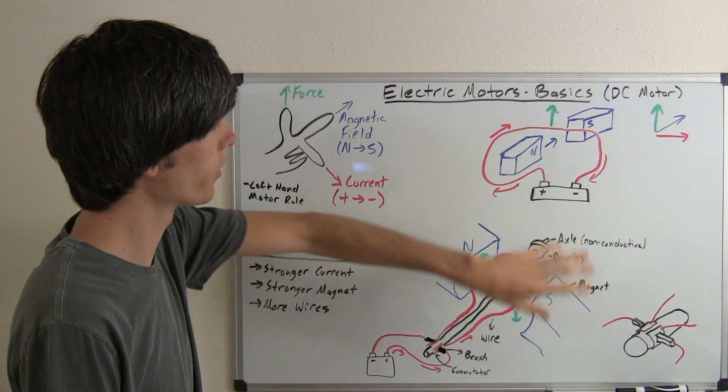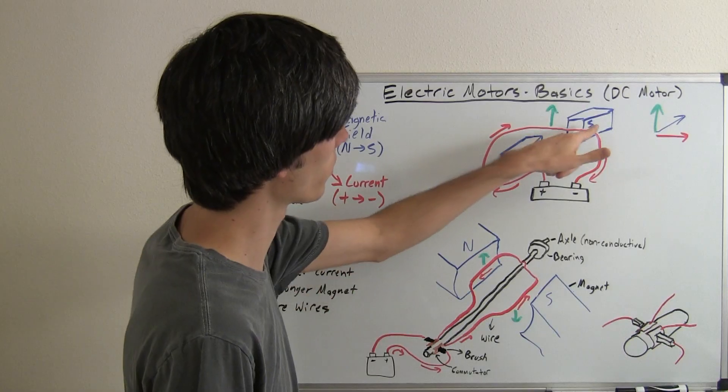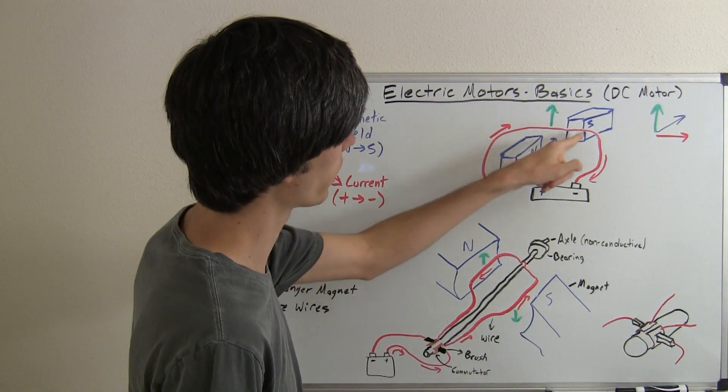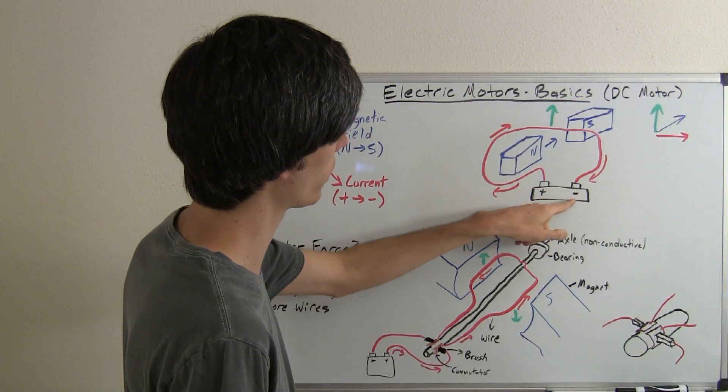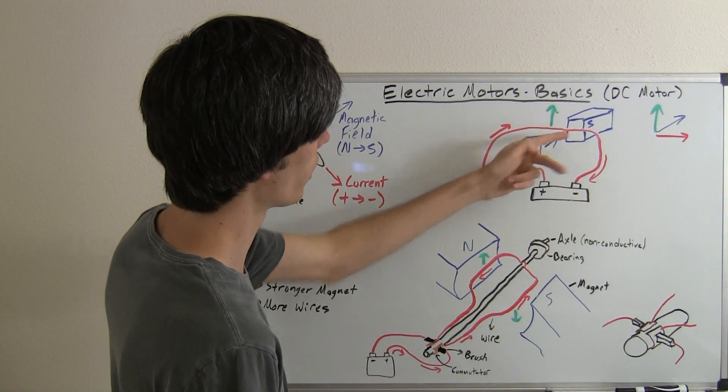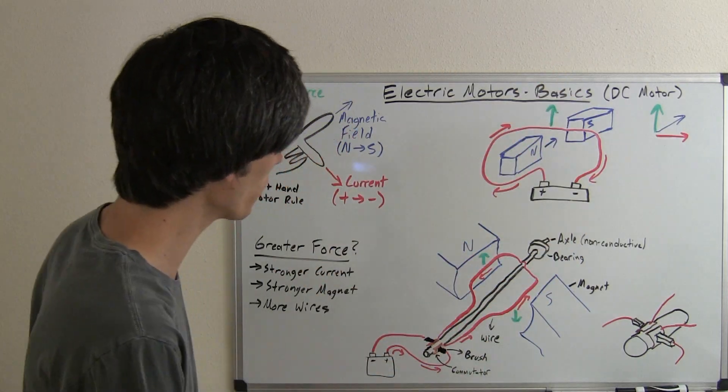So here we've just got a very basic visualization of that. We've got our magnetic field going from north to south in that direction. We've got our current flowing from positive to negative. We've got a battery here, and so that's going to be flowing in this direction. So the force on this wire is going to be up.